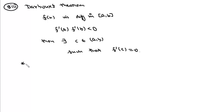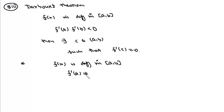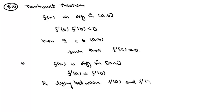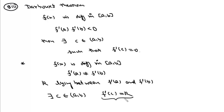A corollary of Darboux's theorem: if f(x) is differentiable on [a, b], f'(a) ≠ f'(b), and k is a number lying between f'(a) and f'(b), then there exists at least one point c in the open interval (a, b) such that f'(c) = k. This is again the Intermediate Value Property of Derivatives.